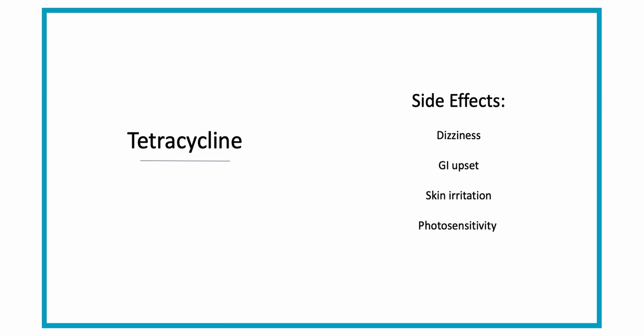If too much of the good bacteria is destroyed in the GI system, it can lead to Clostridioides difficile or C. diff — a very profuse, foul-smelling, bloody diarrhea that can occur for up to two months afterwards. It's also important to monitor the skin, as tetracycline can cause skin irritation that may develop into Stevens-Johnson syndrome. Patients should also wear sunblock and try to stay out of the sun due to photosensitivity.